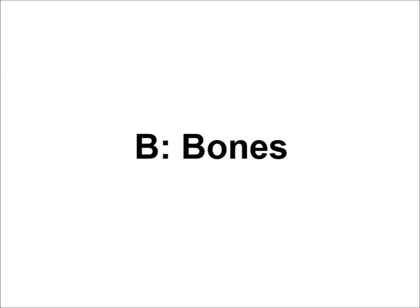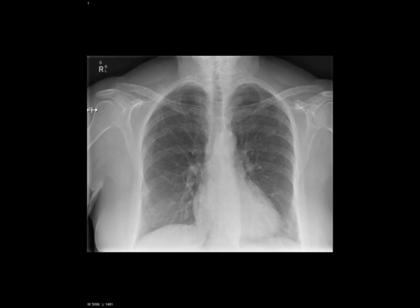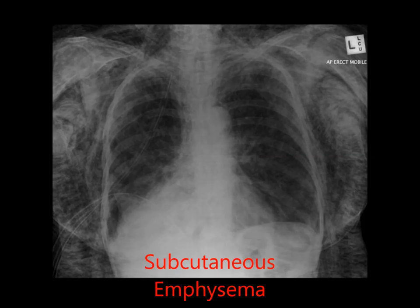B stands for bones. With bones, start at the top and work your way down, making sure you look at all the bones visible on the film. The outlines of each bone should have a smooth contour, and a break in the contour could be a subtle indication of a fracture. Also look for any lesions where the bone is more or less dense than it should be, such as the punched-out lesions often seen in multiple myeloma. Whilst looking at the bones, you should also look at the external soft tissue for any abnormalities.